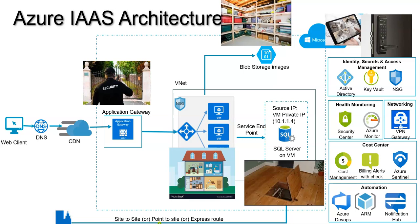If you want to automate various processes within your development lifecycle, you can use ARM templates, Azure Resource Manager, and Azure DevOps. You can also use the notification hub to get relevant notifications whenever server utilization is 80% and above, CPU consumption is high, or you see some kind of threat — you can keep alerts using the notification hub.